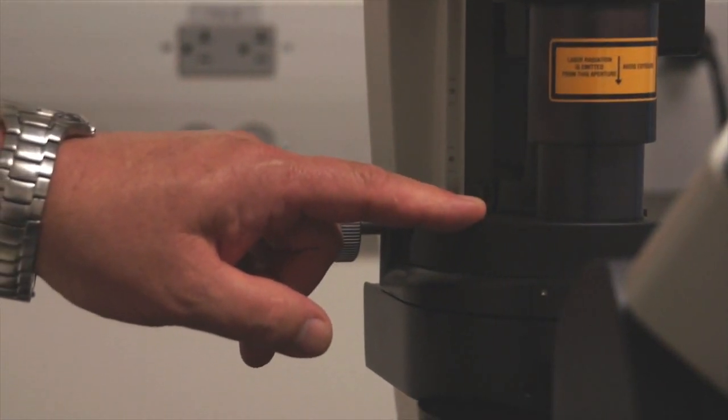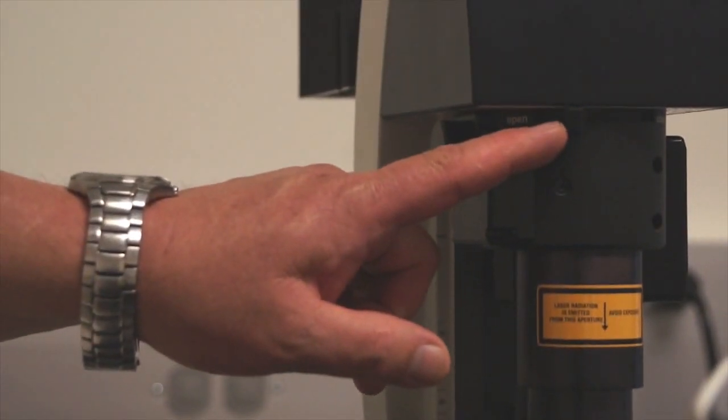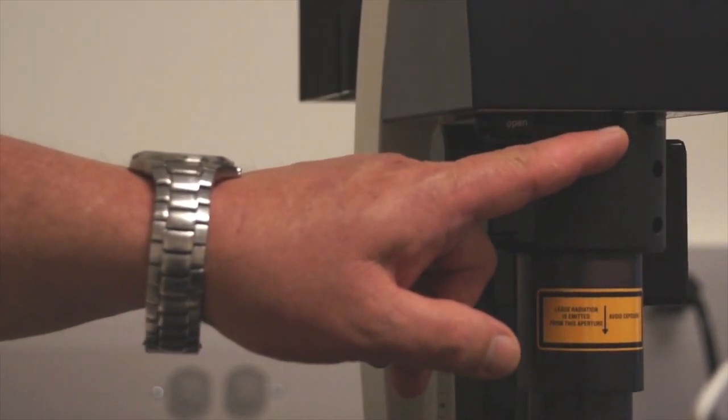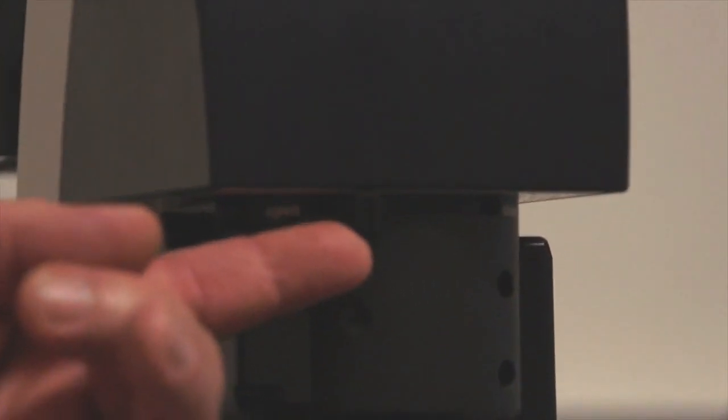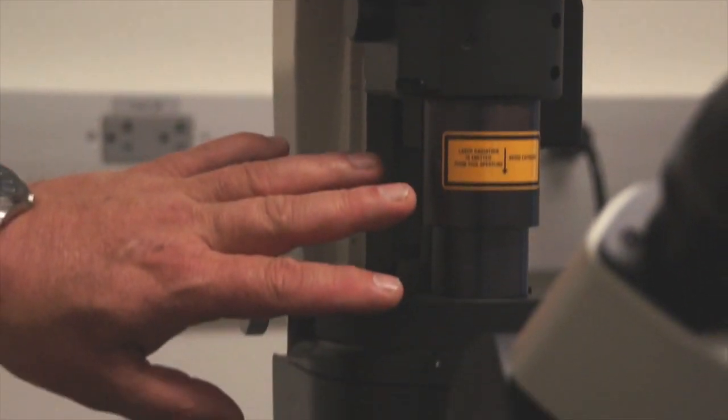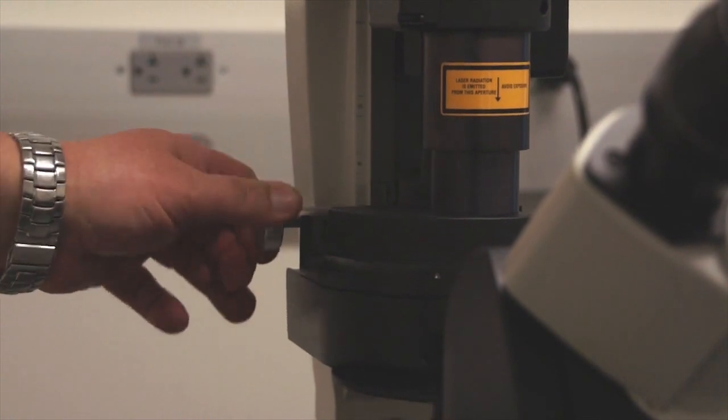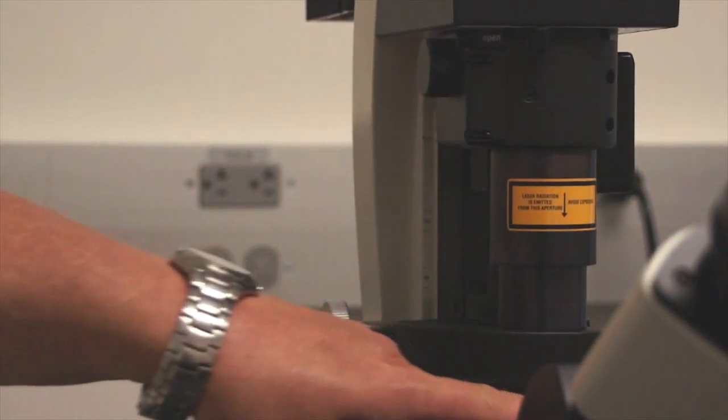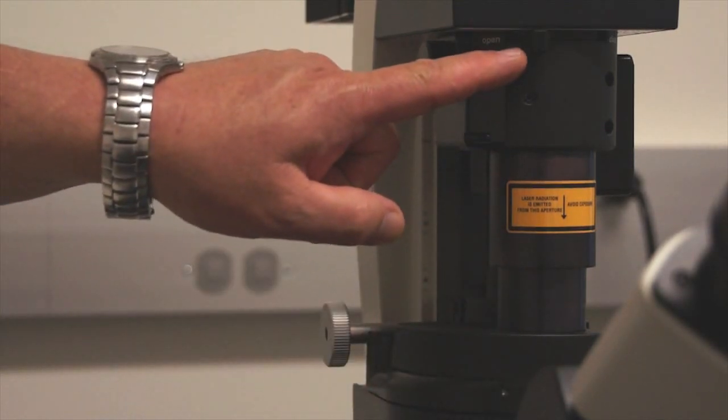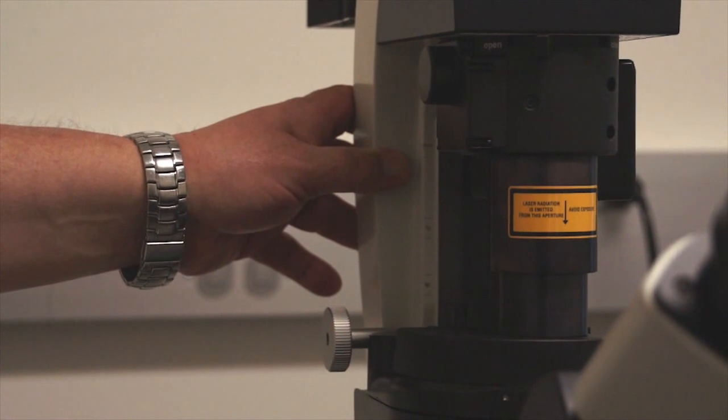And so the field diaphragm on this microscope is manual and it's located here, and so we would close this down and open it up so that we could see it in our field of view. And so we're going to discuss condenser alignment specifically as we did on the upright compound microscope, aligning the condenser, closing the field diaphragm, and then using the alignment tools in here to align the field diaphragm to the field of view.